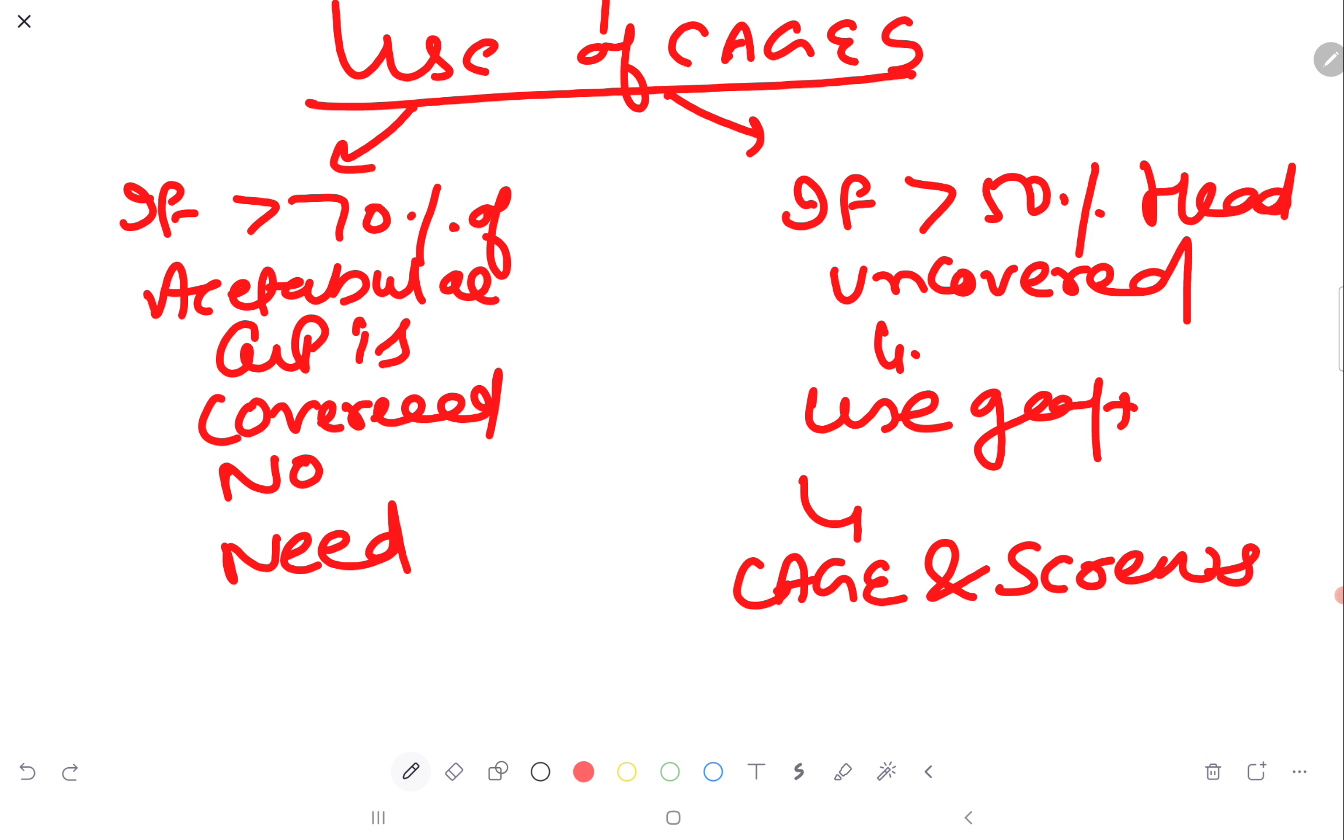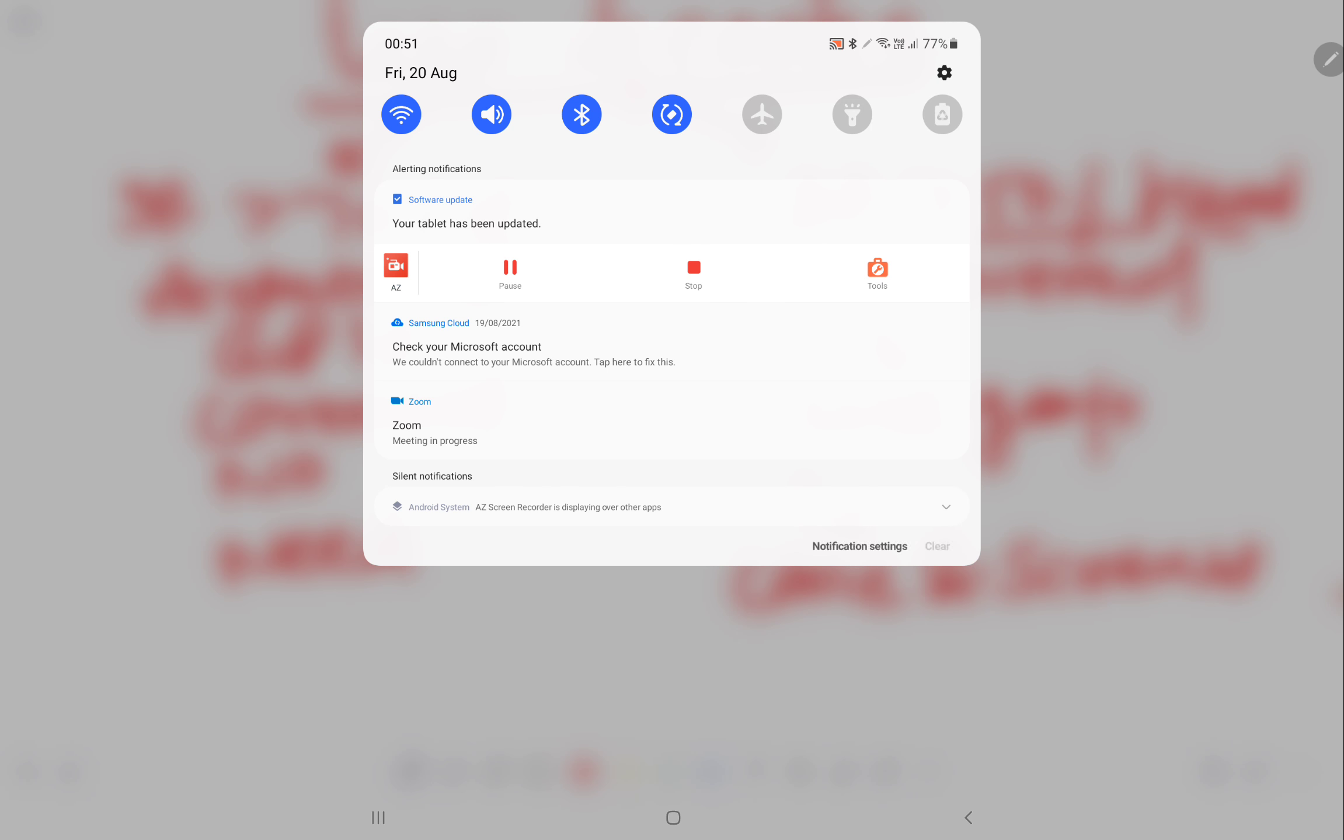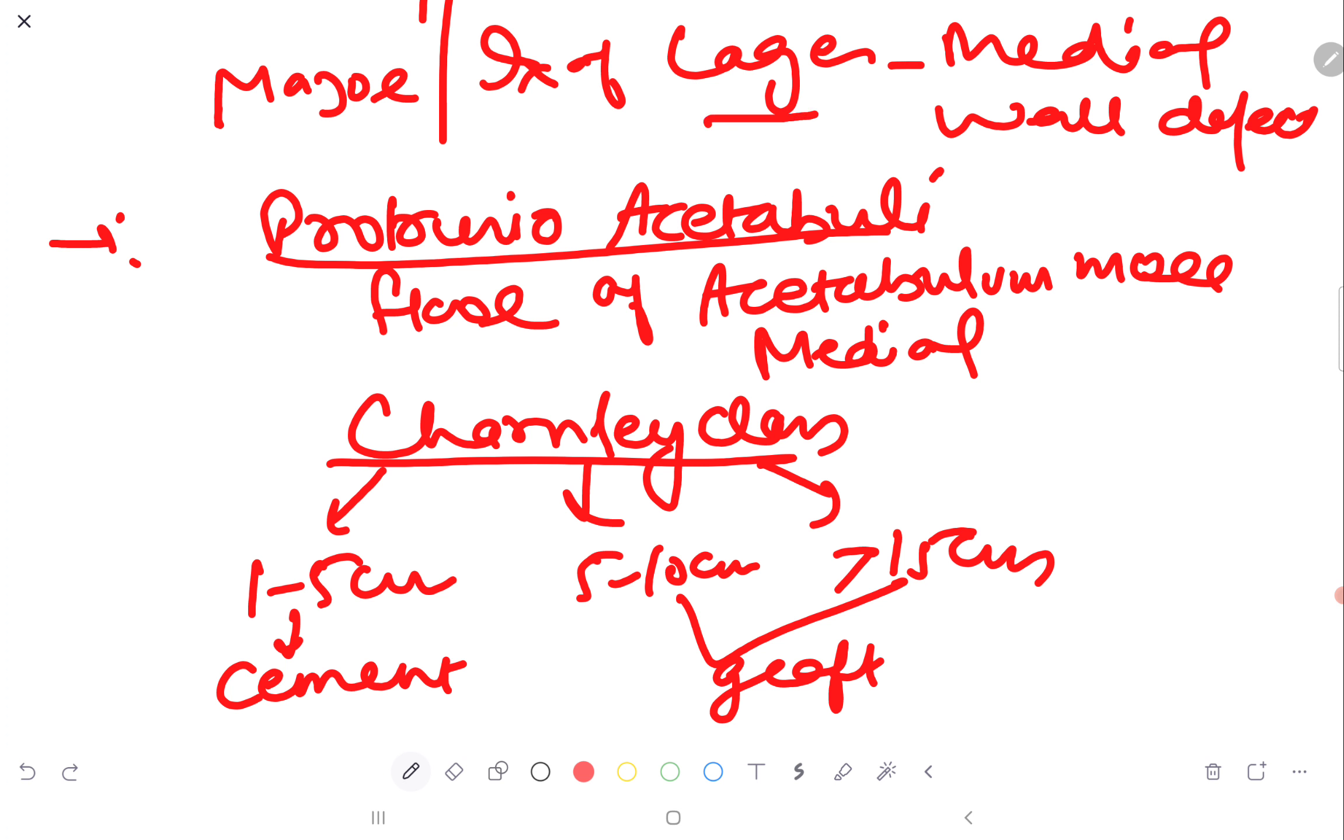Use of cages. Now, if more than 70% of acetabular cup is covered, then no need of bone graft and cages. If more than 50% head is uncovered, then use graft, cage and fix it with the screw. Major indication of cages is medial wall defect. In cases of protrusio acetabuli, true acetabulum is more medial. Charnley gave the classification for it. If 1 to 5 cm medial, if 5 to 10, then type 2, if more than 15, type 3. In the type 2 and type 3, you can use graft, and in type 1, you can use cement.